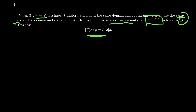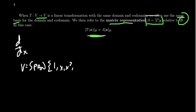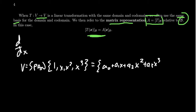A really critical example of this phenomenon is the derivative from Calculus 1. Let's construct some vector spaces with respect to the derivative. Let's take a polynomial space — we'll focus on cubic polynomials. If we take the vector space spanned by the monomials 1, x, x squared, and x cubed, this is the set of all polynomials of the form A0 plus A1·x plus A2·x² plus A3·x³, where A0, A1, A2, and A3 are all just real numbers.